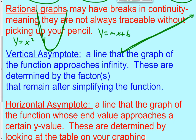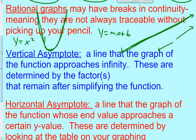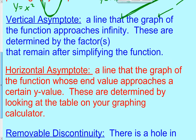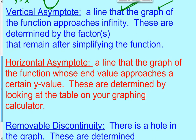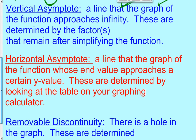With rational graphs, you may have to start drawing, lift up your pencil, move to another place, and continue drawing. That's what it means to have a break in continuity. These breaks are created through asymptotes as well as removable discontinuities.